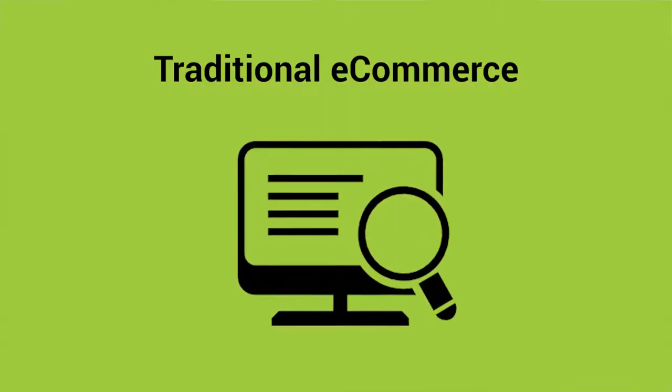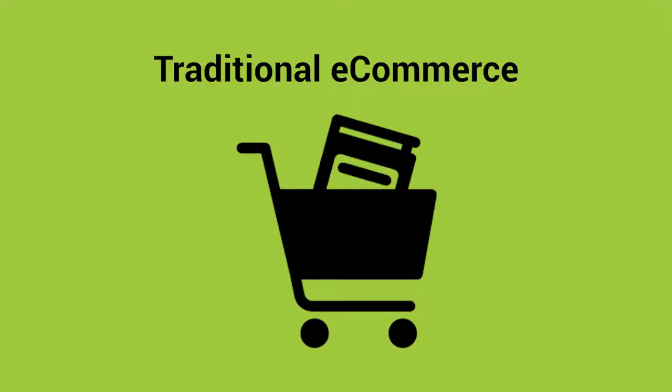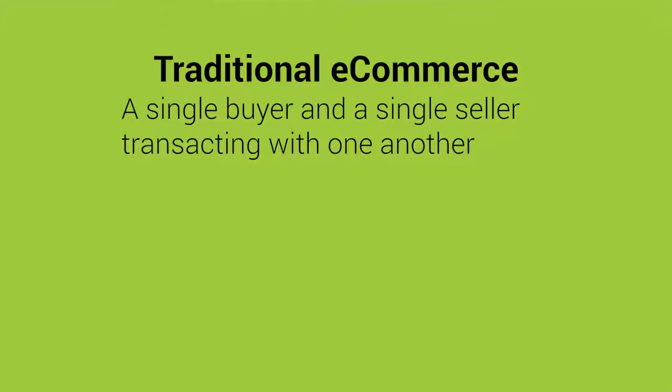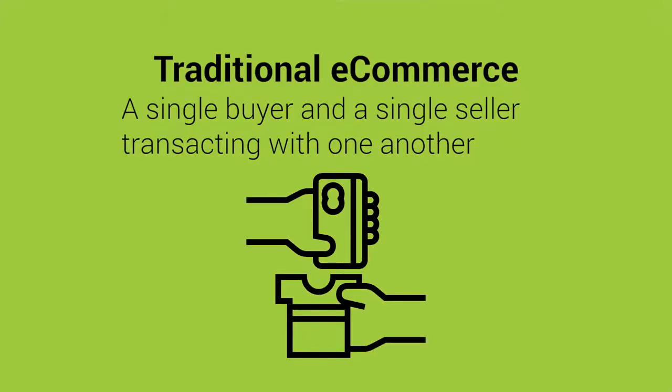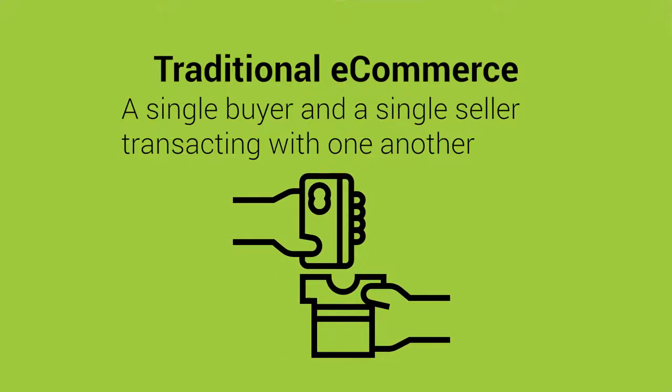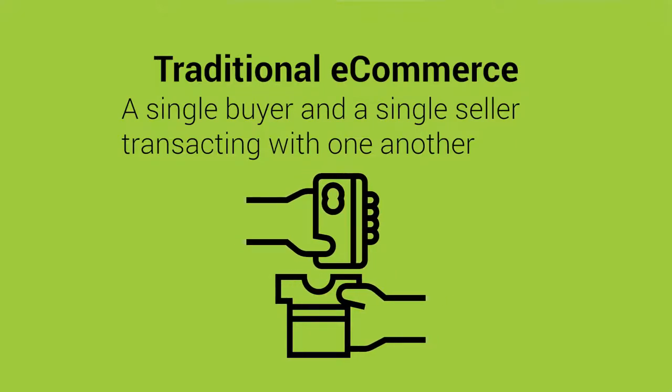The second type is traditional e-commerce. A great example is any e-commerce site where you can search for products and purchase them. I'm using the word 'traditional' here rather than 'marketplace' because this isn't the type where you have multiple buyers and sellers. This is usually still a single buyer and a single seller transacting with one another.